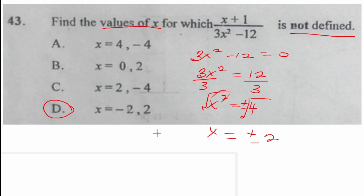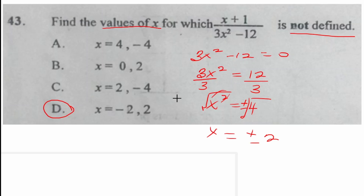You can verify on your calculator. When you put 2: 2 squared is 4, times 3 is 12, and 12 minus 12 is 0. When you put negative 2 — remember to put it in parentheses — negative 2 squared is 4, times 3 is 12, and 12 minus 12 is 0. So the values of x for which the expression is undefined are negative 2 or 2.